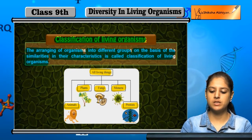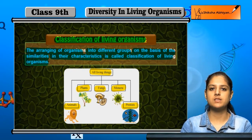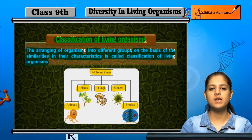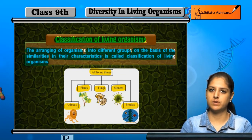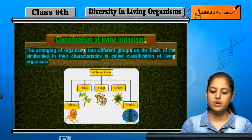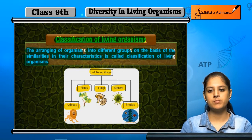These are five broad groups into which we can classify all living organisms. Further, these groups also have subgroups, which we will study together.